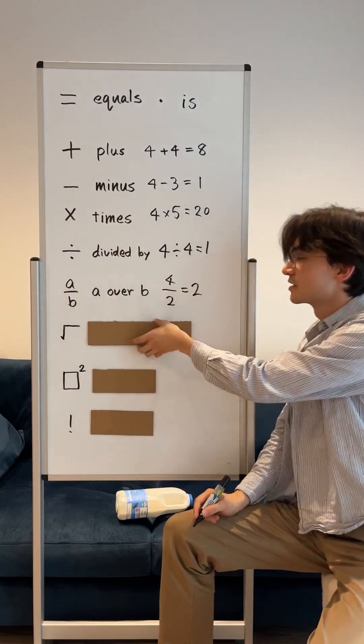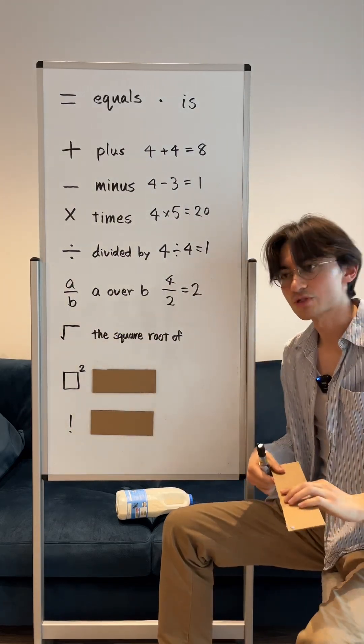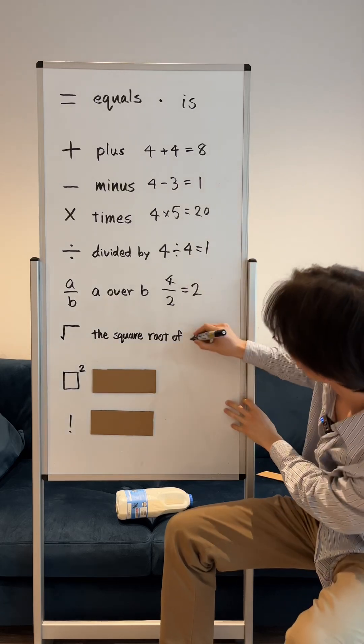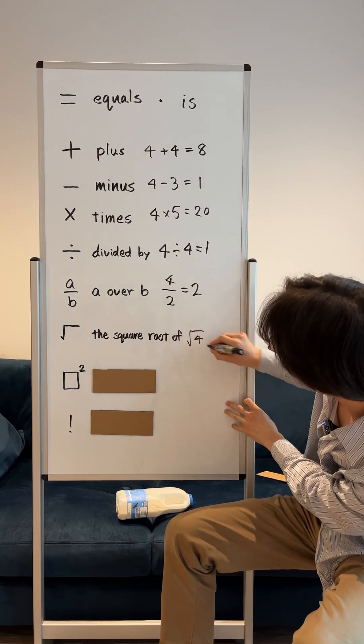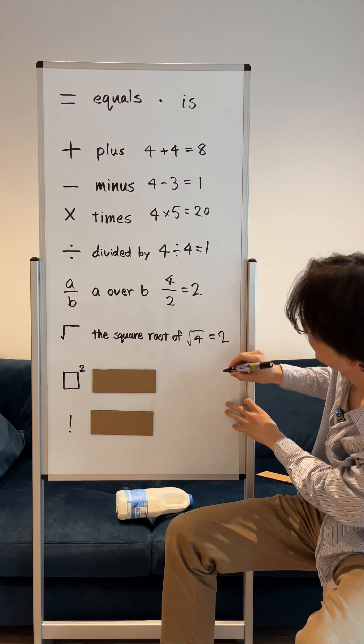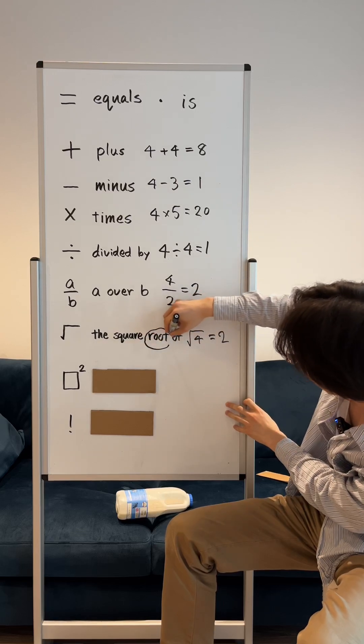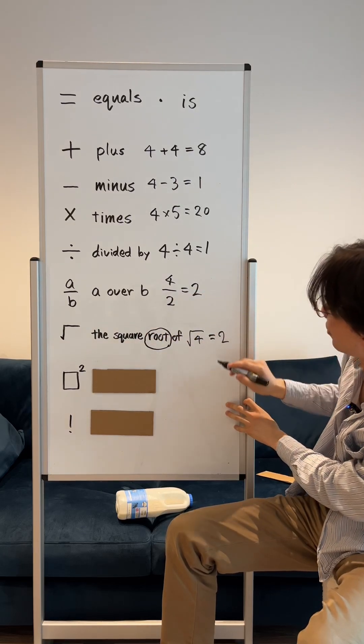This, we say the square root of. So the square root of 4 is 2. Some people just say root. So root 4 is 2.